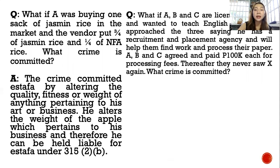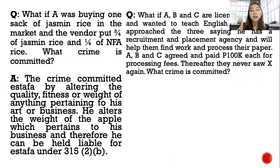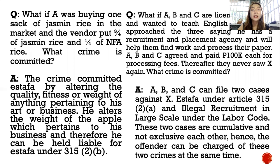Another example: A, B, and C are licensed teachers wanting to teach English in Korea. X approached the three, saying he has a recruitment and placement agency and will help them find work and process their papers. A, B, and C agreed and paid 100,000 pesos each for processing fees. Thereafter, X was never seen again. What crime did X commit? A, B, and C can file two cases against X: estafa under Article 315, and illegal recruitment in large scale under the Labor Code. These two are cumulative and not exclusive of each other — the offender can be charged of both crimes at the same time.